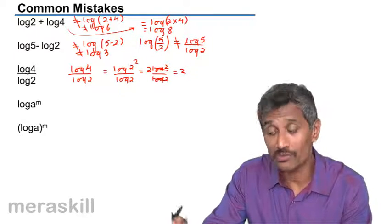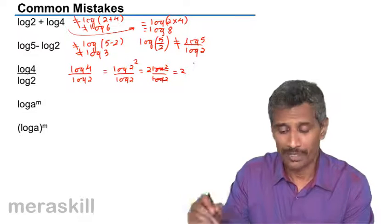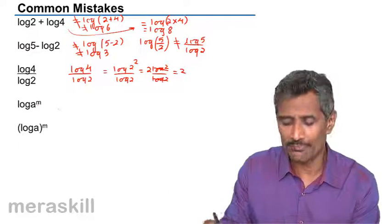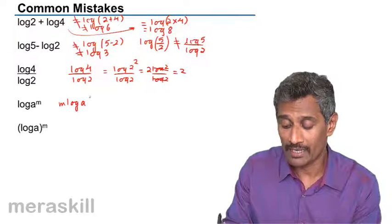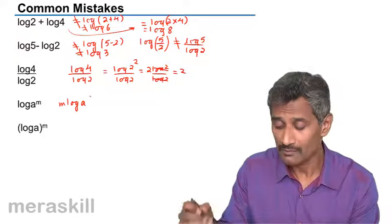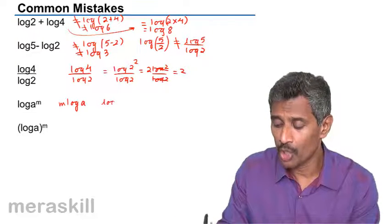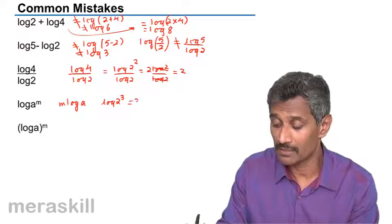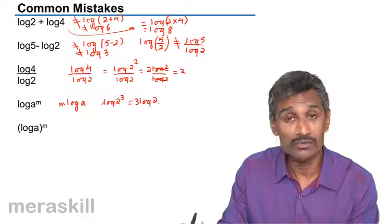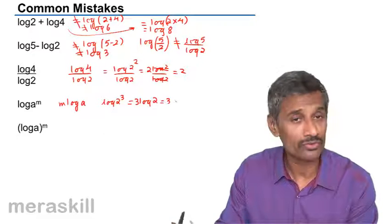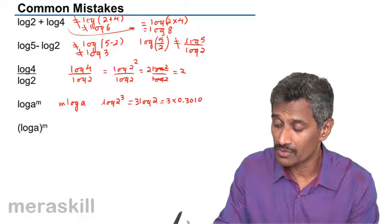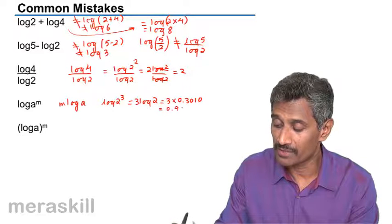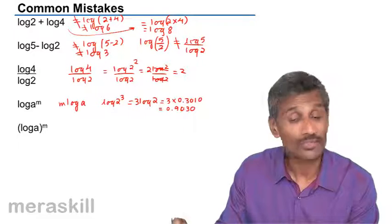Then we have the familiar rule: log(a raised to m) = m·log a. For example, log(2³) is nothing but 3·log 2. Since log 2 to the base 10 is 0.3010, this gives 3 × 0.3010 = 0.9030.